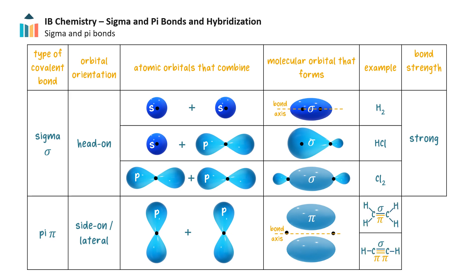A pi bond can only form as part of a double or triple bond. In multiple bonds, there is always a sigma bond, and any second or third bond is a pi bond. Pi bonds are generally weaker than sigma bonds and break more easily. The reason for this is the electron density of a pi bond is further from the positive charge of the nuclei.